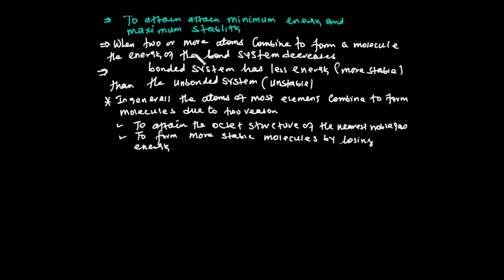Now we will discuss ionic bonds. Chemical bonding includes ionic bonding and covalent bonding. We will cover ionic bonding next. Thank you.